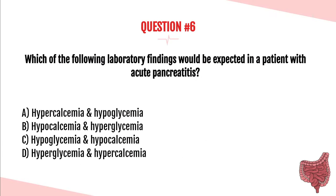Question number six. Which of the following laboratory findings would be expected in a patient with acute pancreatitis? A. Hypercalcemia and hypoglycemia. B. Hypocalcemia and hyperglycemia. C. Hypoglycemia and hypocalcemia. Or D. Hyperglycemia and hypercalcemia. The answer is B — hypocalcemia and hyperglycemia.